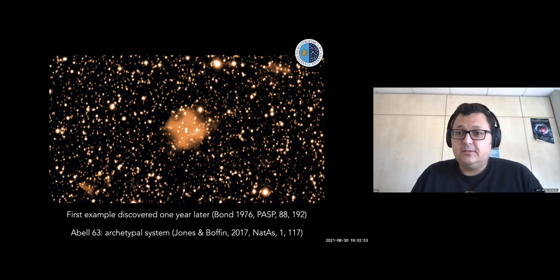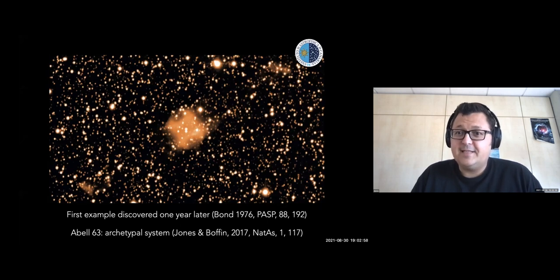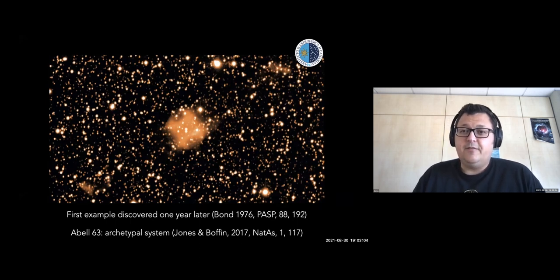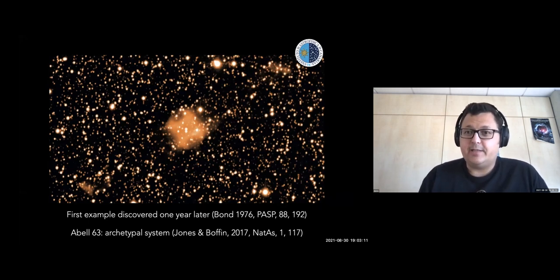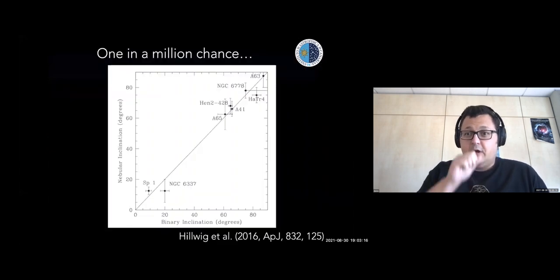The companion of the central star, which I said is a main sequence star, is inflated — its radius is about three times what you would expect for a typical main sequence star of that mass. These are all properties that we might come back to later as being archetypal among central stars.